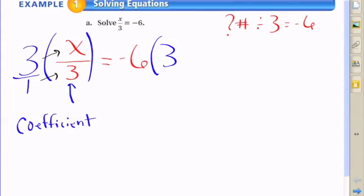because since we're multiplying what appears to be a fractional value, it's kind of easier to just see that you're multiplying across. Like 3 times x is 3x, 1 times 3 is 3. So you're going to have 3x over 3 equals whatever negative 6 times 3 is.